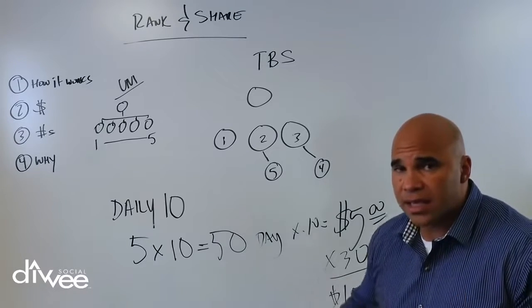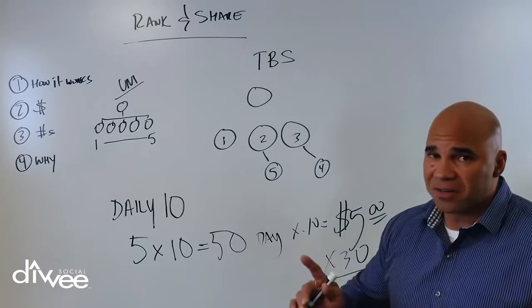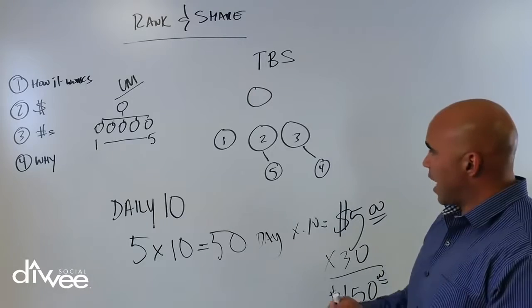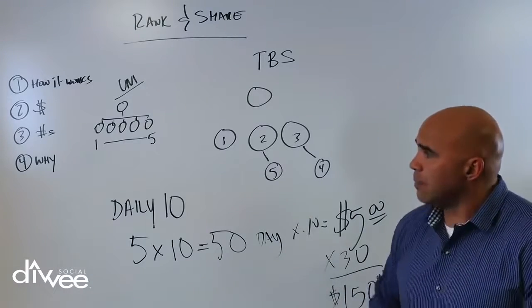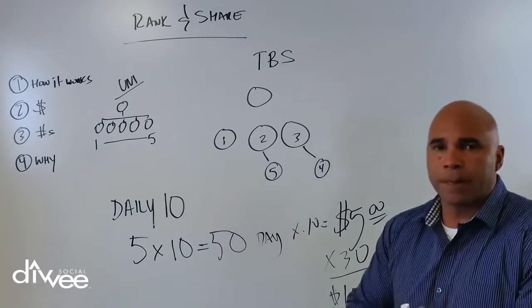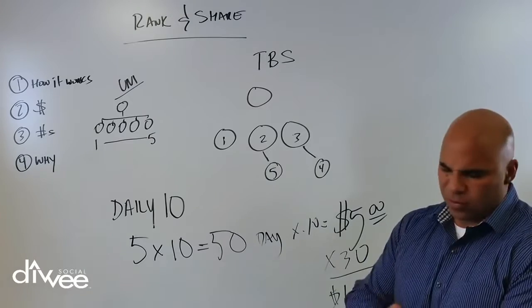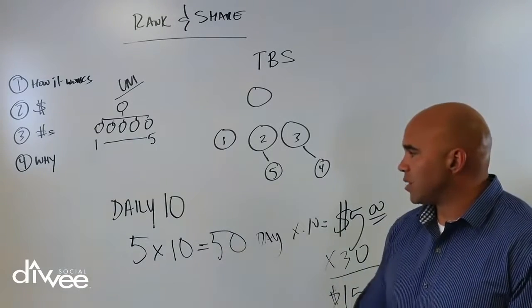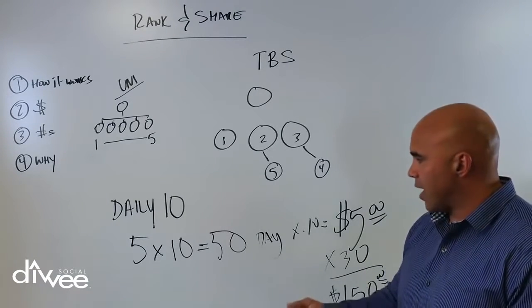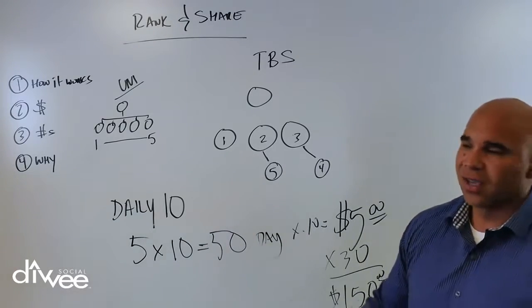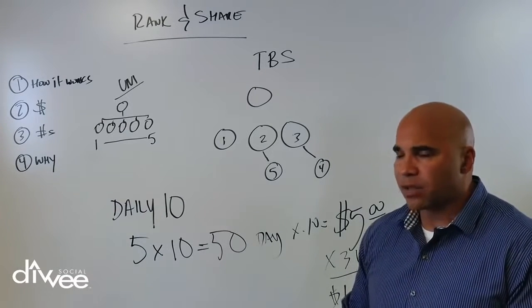But I like ten cents because it's easy math. So five bucks times thirty is one fifty. Now where things get really interesting is instead of getting five, let's say you have ten people. So that just went to ten bucks, now you're making three hundred a month. Did it cost you anything? No, we're not selling anything. Did you have a monthly auto ship? No, we don't have one. Are you going to have a hard time trying to sell something? No, you don't have to sell anything.